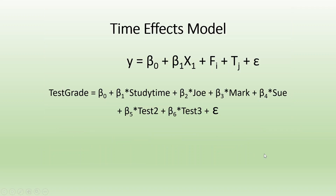Now we will change the model by introducing the time element. So Y = β₀ + β₁X₁ + φᵢ + τⱼ + error, where φᵢ is for the cross-section (students) and τⱼ is for the test. Our formal equation becomes: test grade = β₀ + β₁(study time) + β₂(Joe) + β₃(Mark) + β₄(Sue) + β₅(test 2) + β₆(test 3). Test 1 becomes the reference category and is captured by the intercept.